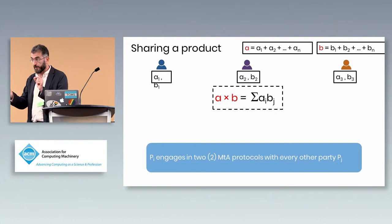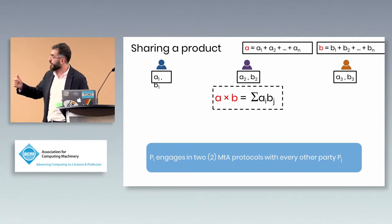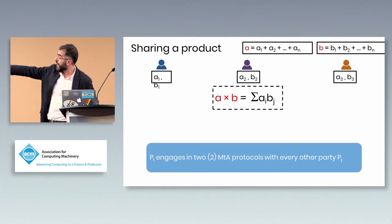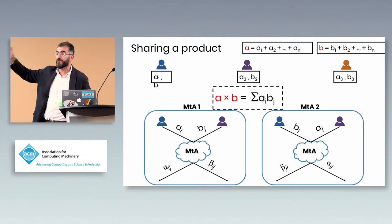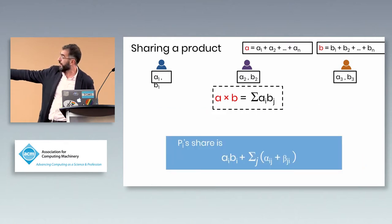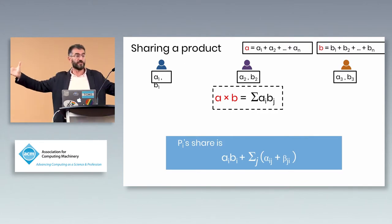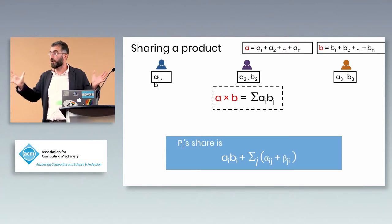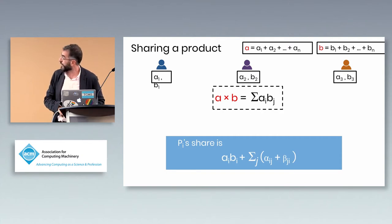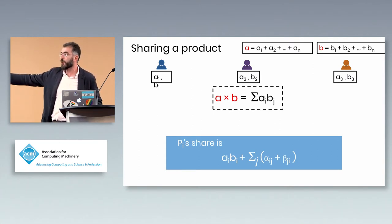Now scaling to many parties: if a and b are held as additive shares and we want a sharing of the product ab, we note that ab equals the sum of all cross products a_i × b_j. Every pair of players invokes the pairwise multiplicative-to-additive protocol on each pair (a_i, b_j). Combining all the resulting additive shares from these n² pairwise protocols yields an additive share of the product ab.